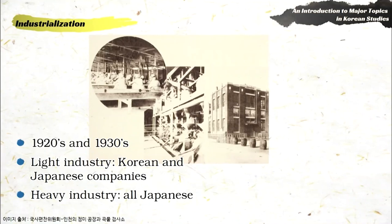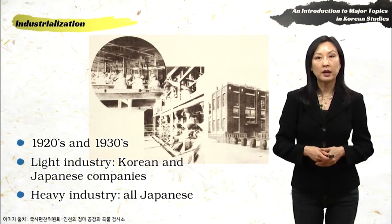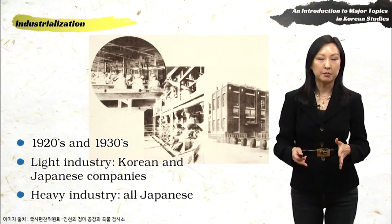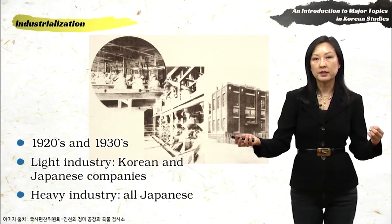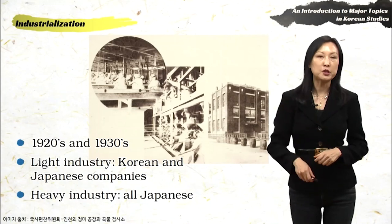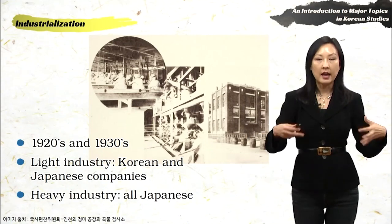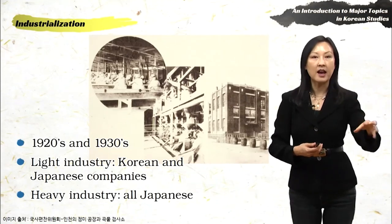If we look at industrialization, this occurred in the 1920s and 1930s. There are two types of industry: light industry and heavy industry. Light industrial companies were owned by both Koreans and Japanese, but heavy industry was owned entirely by Japanese companies — really the big conglomerates, the Zaibatsu, that are very recognizable today, such as Mitsubishi and Toyota. These conglomerates were bolstered by economic development in the colonies and their access to colonial resources.